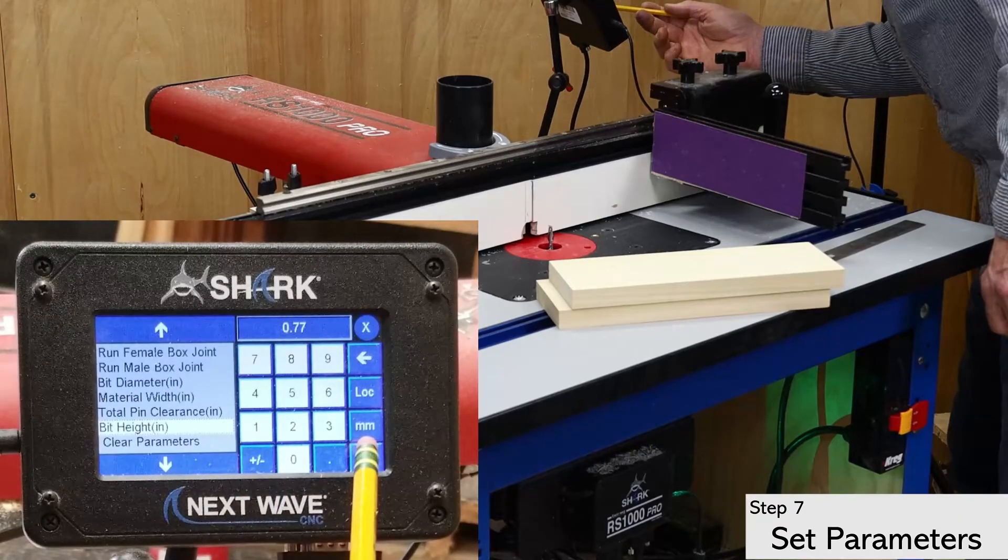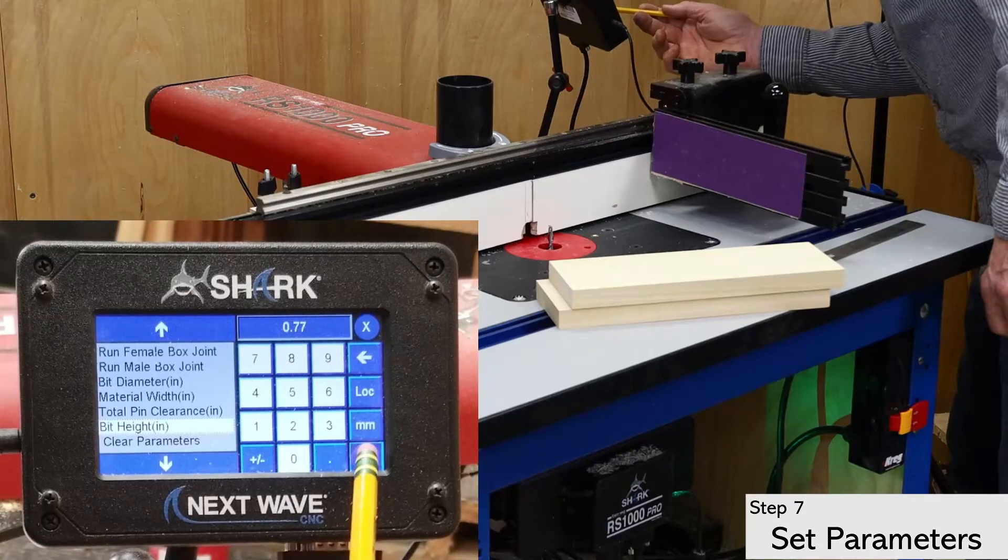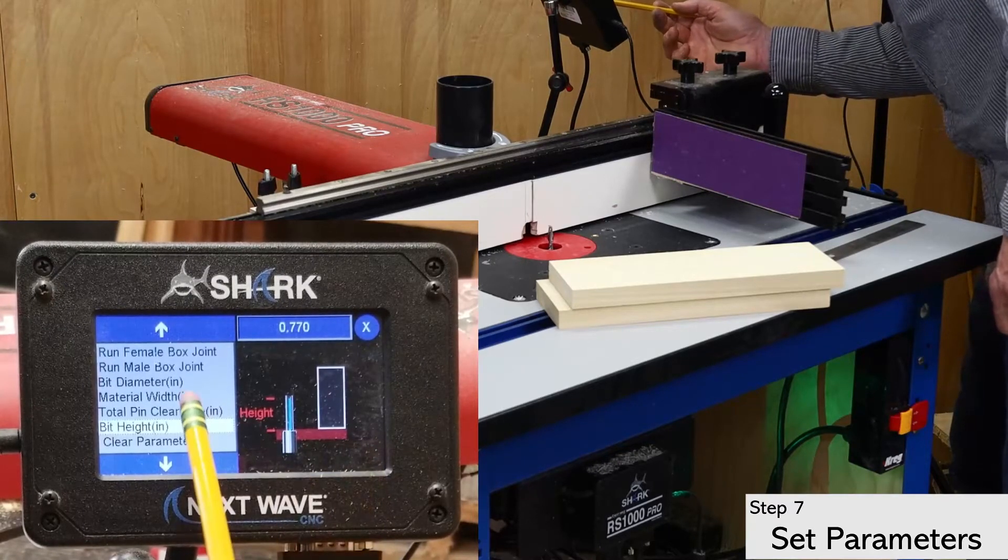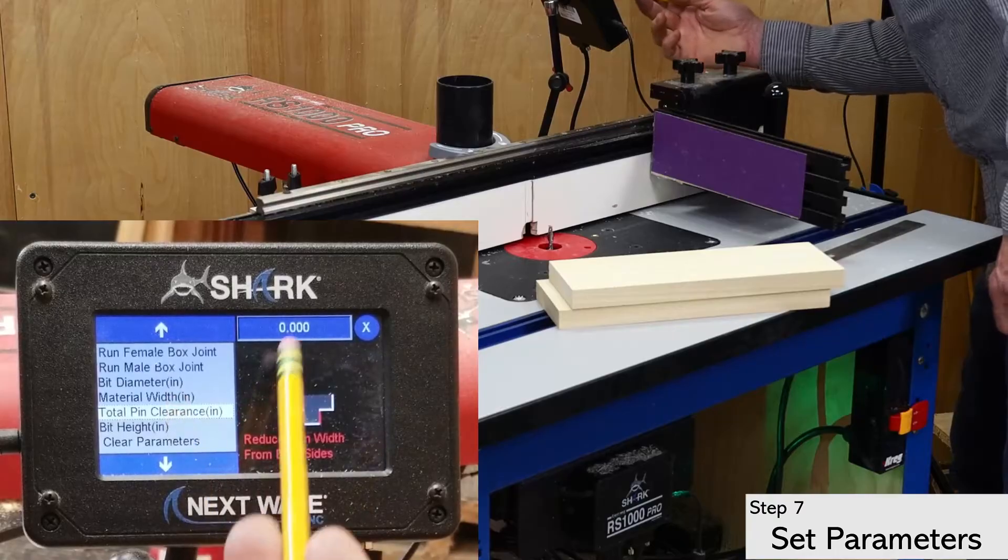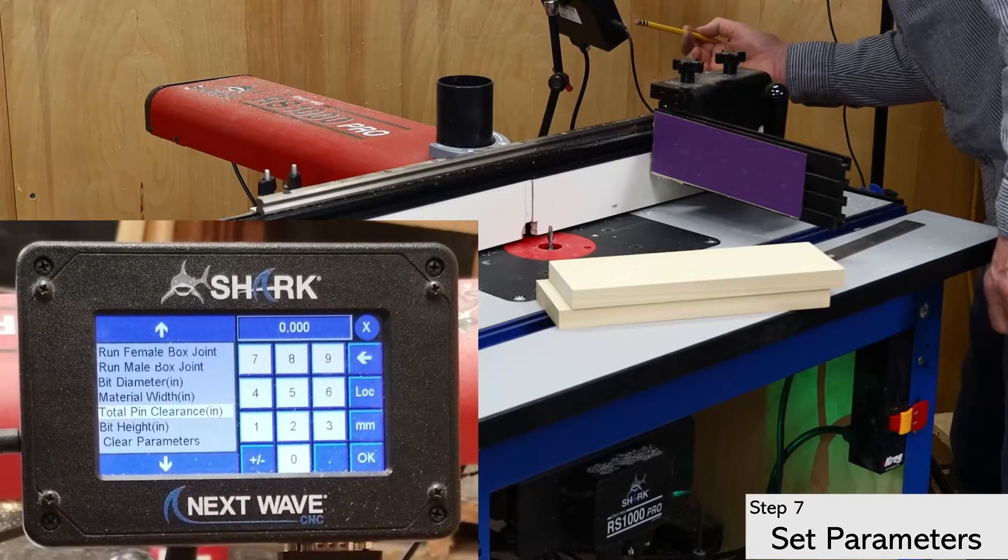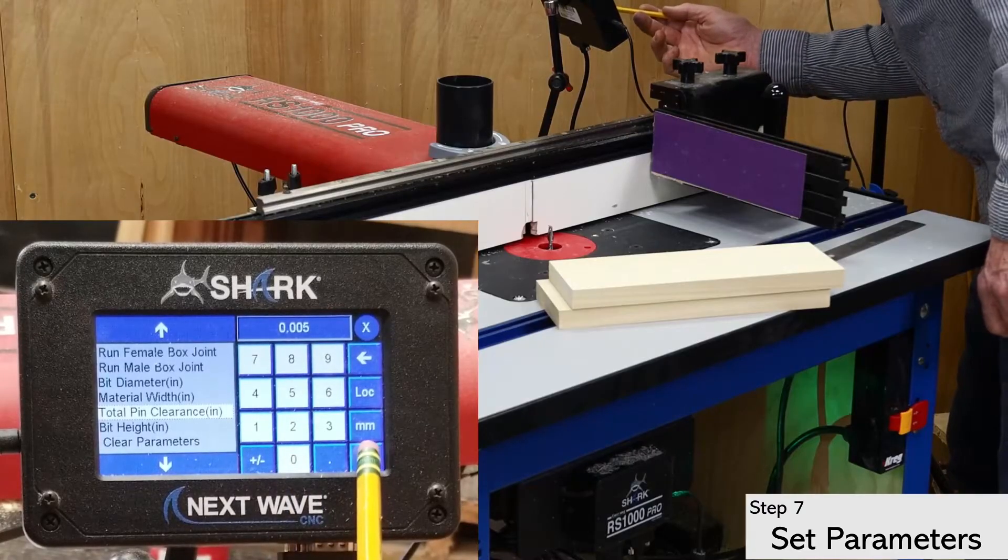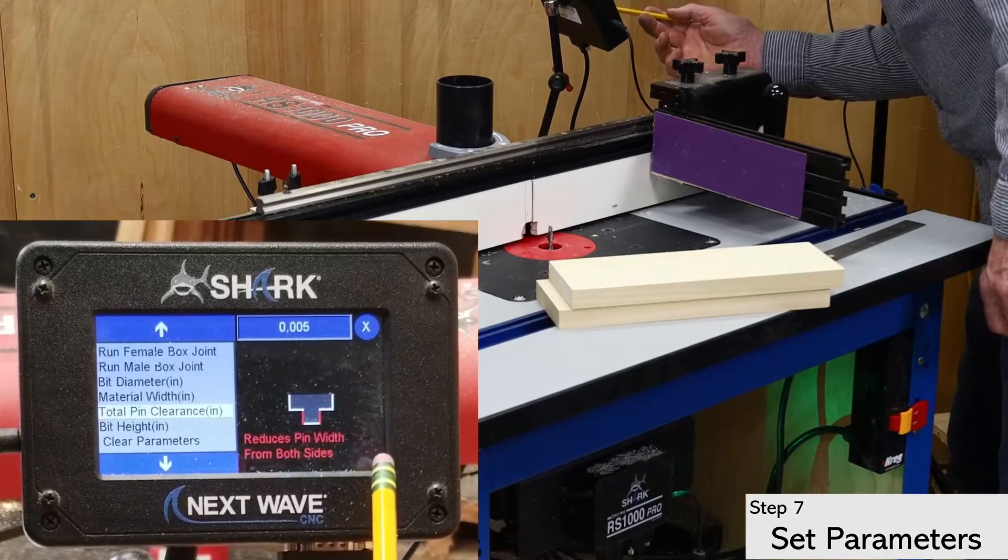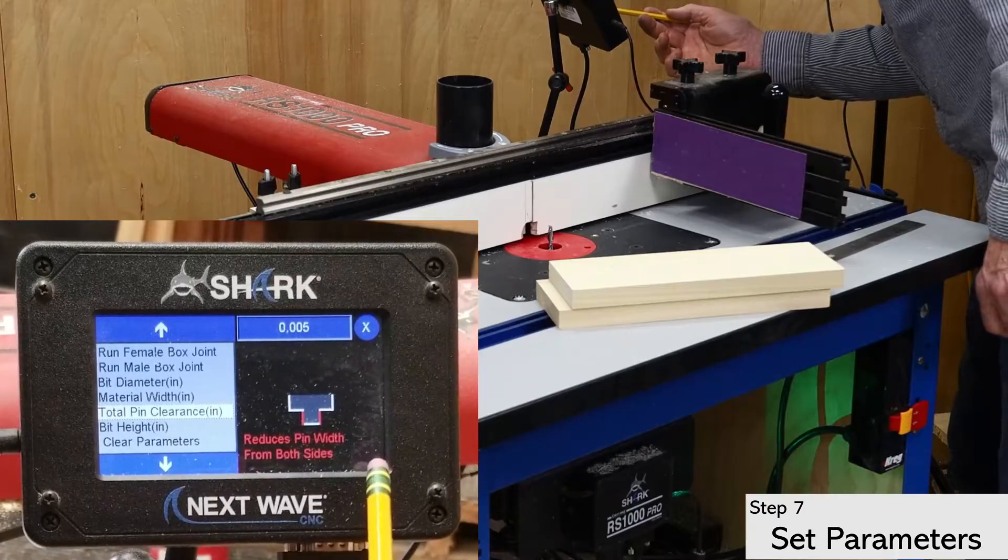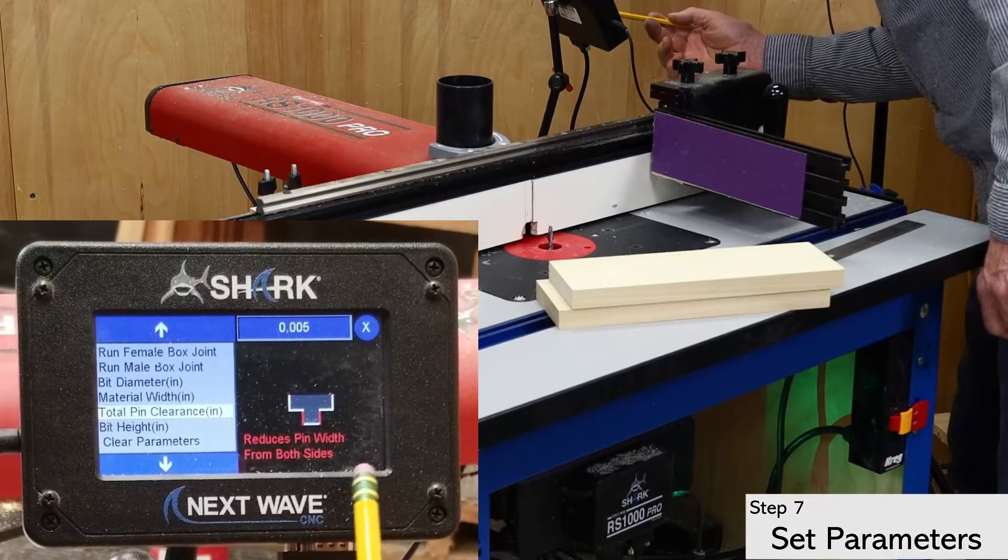For the box joint, I typically set this a little greater than the thickness of my material. Next is the bit clearance. I find that 0.005 is a good place to start since I can always go back and add more later if the fit is too tight. But if it's too loose, then I'll need to start over with new boards.